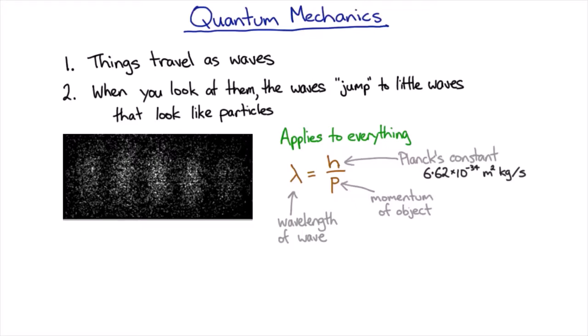And so in order to see an interference pattern, you have to very carefully control everything about your system. And it helps if it's very, very light as well, which is why we can do it fairly easily for photons or for electrons, but it's considerably harder to do for something like a large molecule.